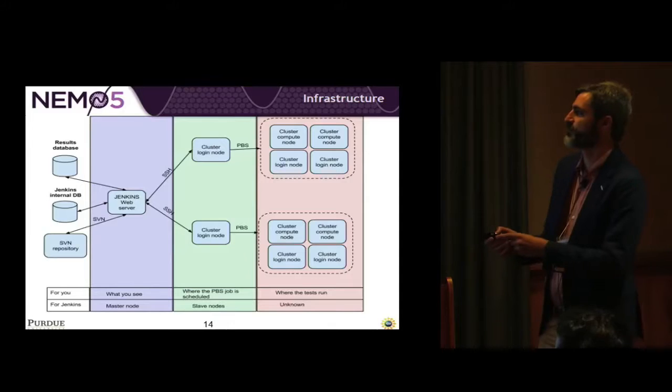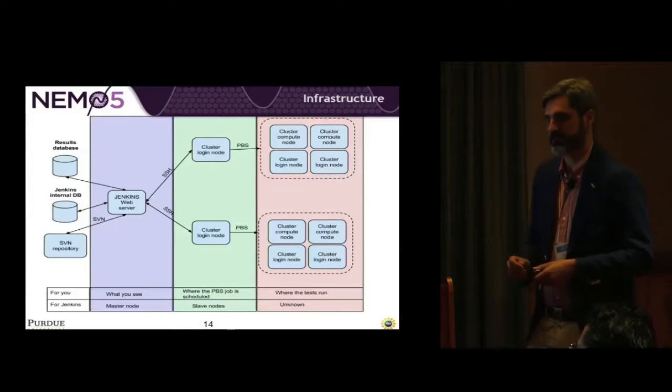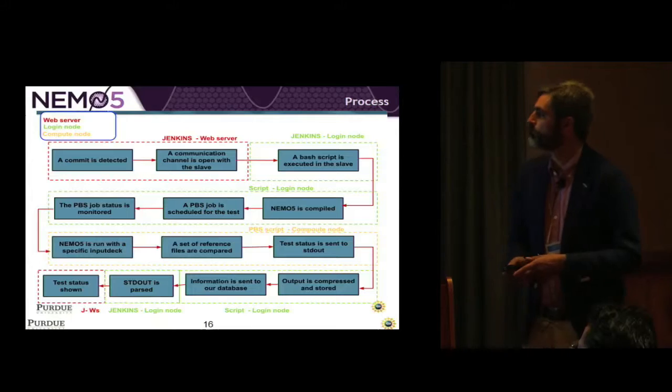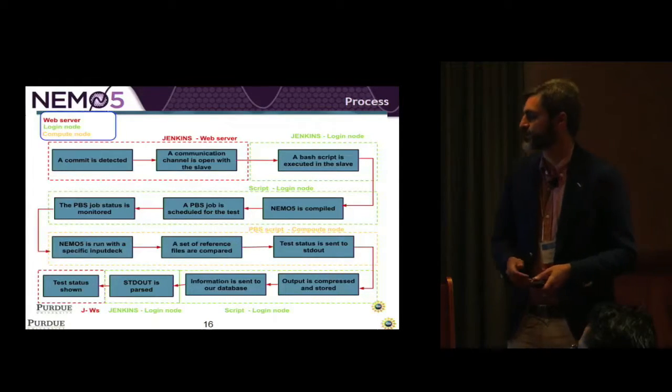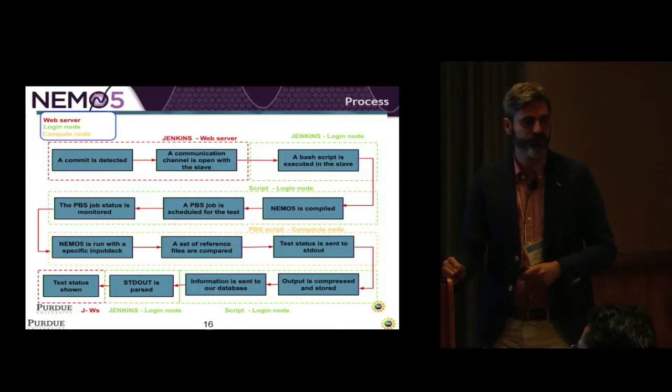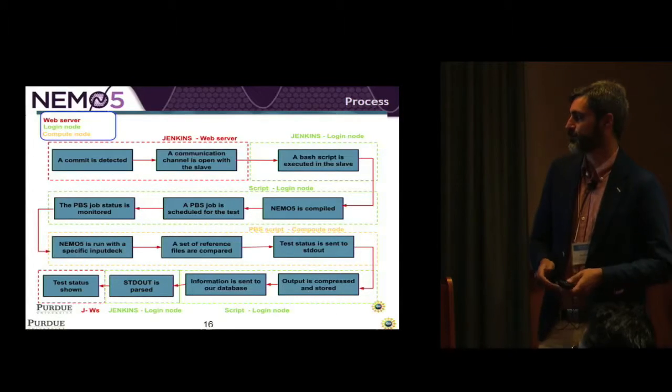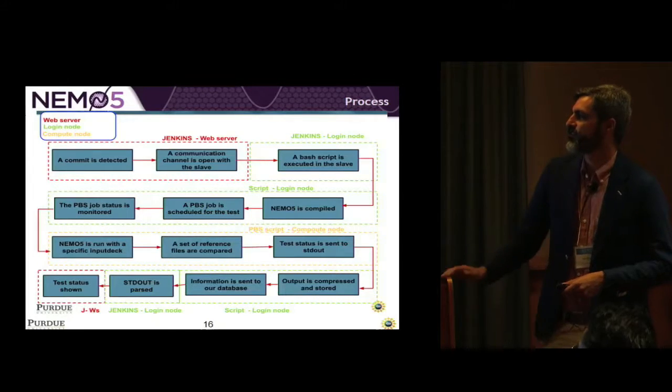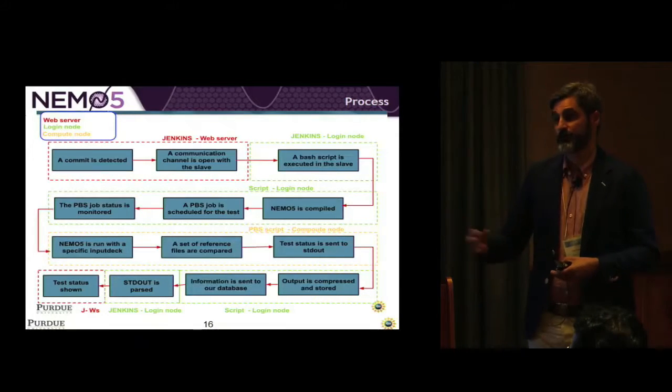But basically you have a, there's a Jenkins web server. Of course, it has a database to keep track of what tests we have. It's interfacing with the SVN repository where the code is. And then it's basically sending jobs out to the clusters. Kind of the similar information shown in a different way. One of the biggest parts that was missing from this was that Jenkins had no interface to deal with PBS. Like Jenkins like doesn't know what PBS is at all. So we developed something called a launcher, which was significant. It's like 5,000 lines of Python just to deal with taking a test, submitting it to the compute clusters, querying whether the job is done, getting the data back, putting stuff in the appropriate databases.